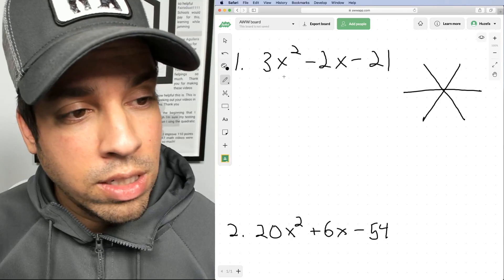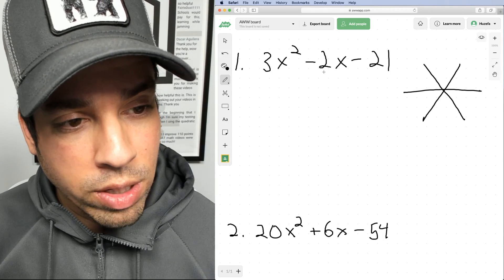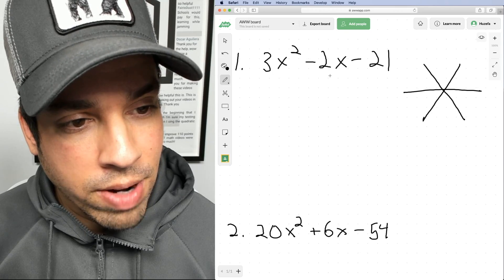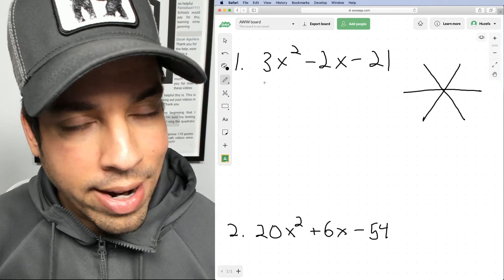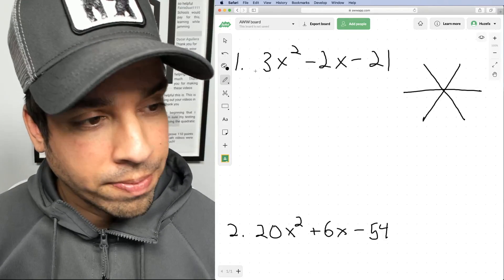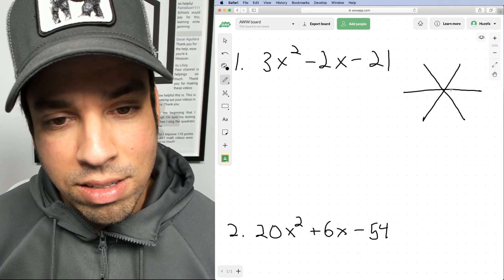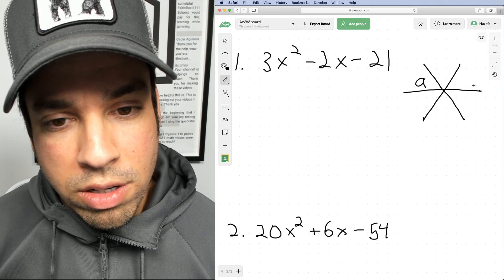Before we even use this we need to make sure there's no GCF that we can factor out of all the terms. But since there's no greatest common factor that exists for 21, 2 and 3, we're good on that front. Next, it's important to know how this all breaks down.